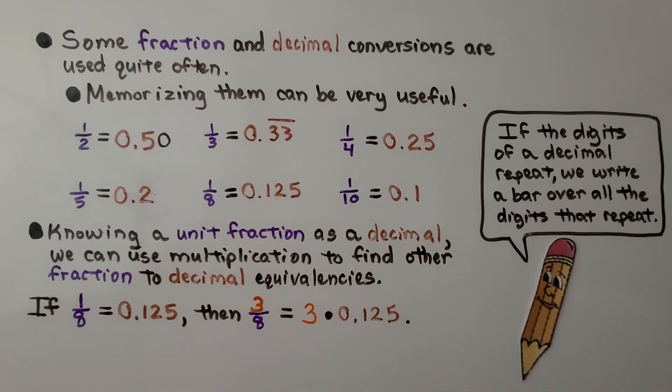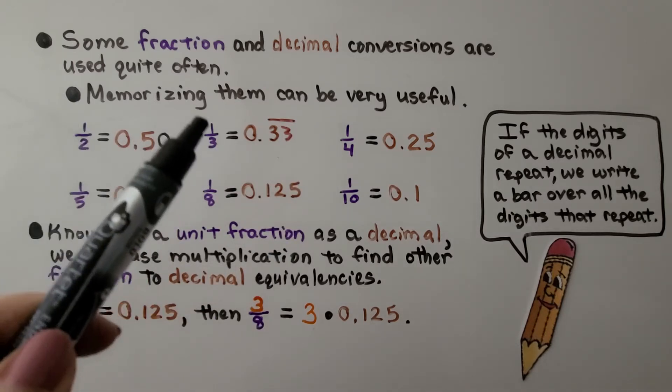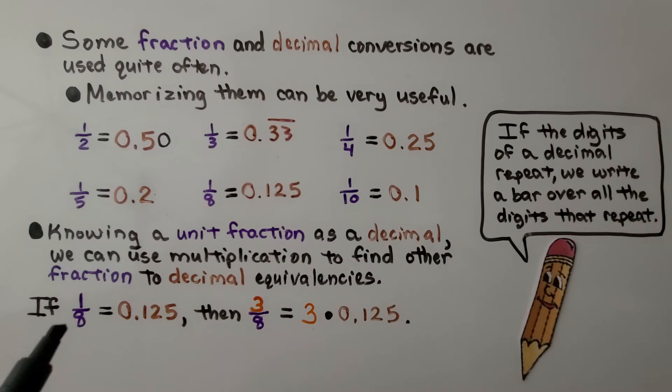Knowing a unit fraction as a decimal, we can use multiplication to find other fraction-to-decimal equivalencies. These are all unit fractions because they all have a one as the numerator. That's a unit fraction. So if one-eighth is 0.125, then three-eighths would be three times that. We could very easily find it.